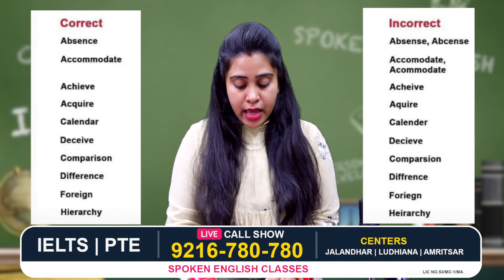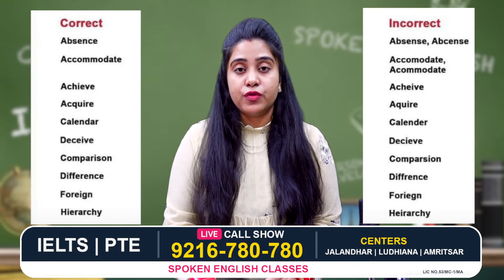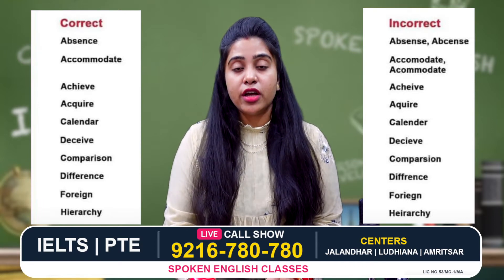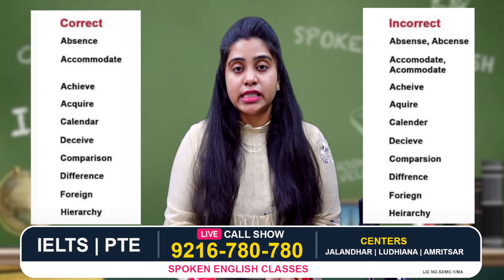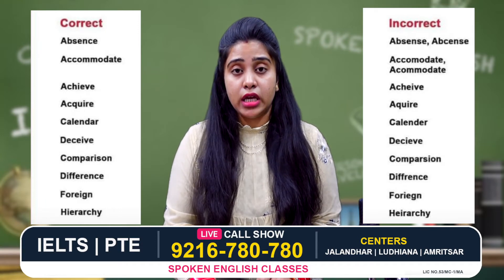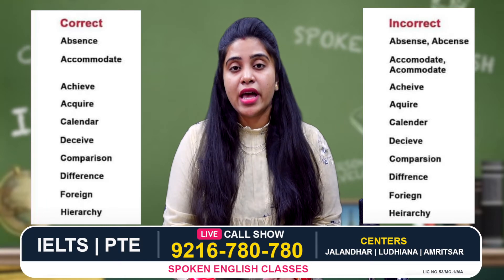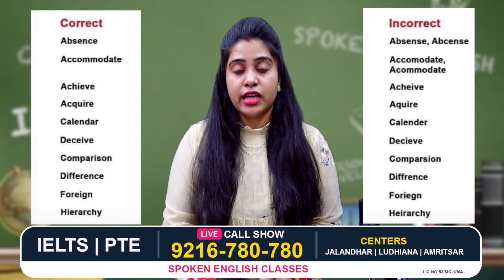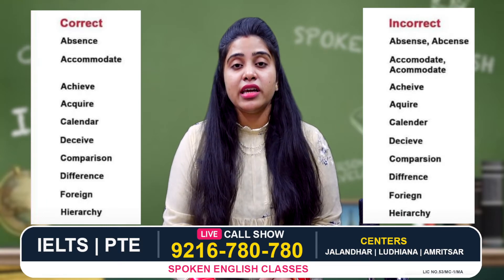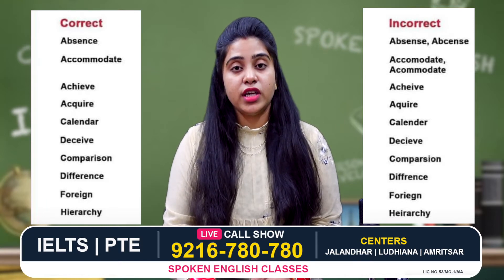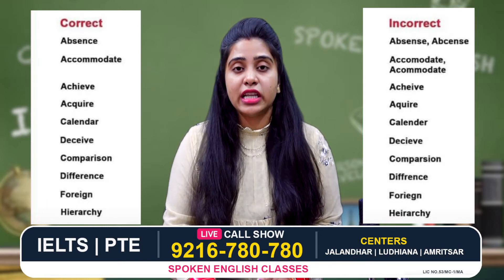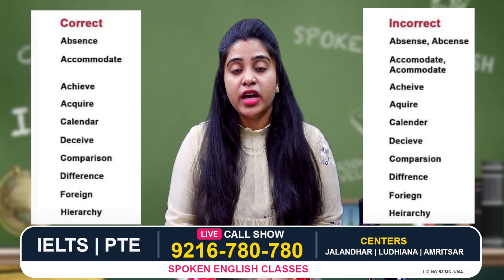The third word is 'achieve'. The right spelling of achieve is a, c, h, i, e, v, e. But students use a, c, h, e, i, e, v, e — which is the wrong spelling.